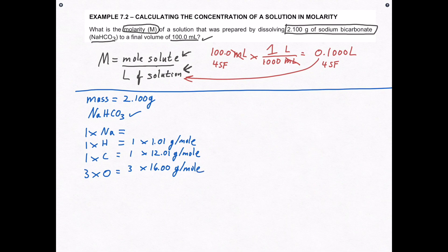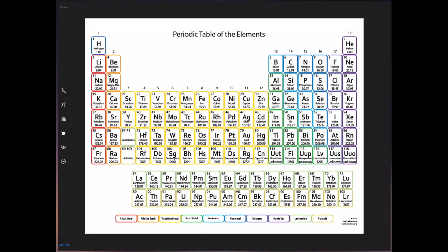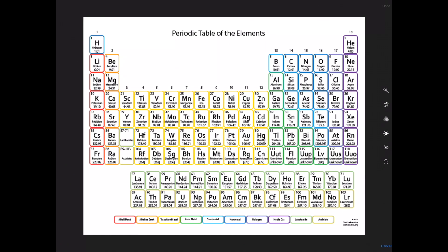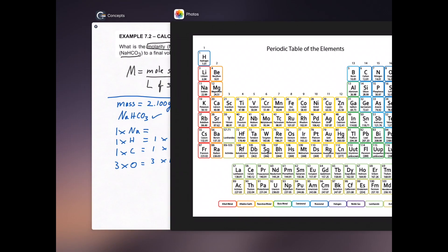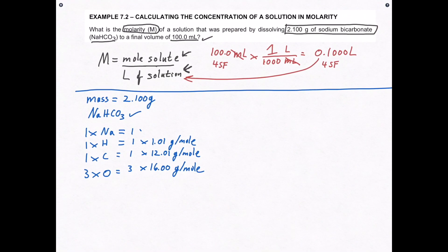So to find sodium, I have to look on a periodic table. Luckily for me, I have one right here. And there's sodium, element number 11, molar mass is 22.99. So let's go back. So it's going to be 1 times 22.99 grams per mole.